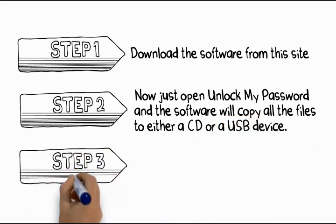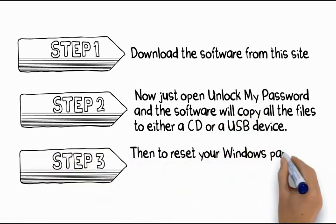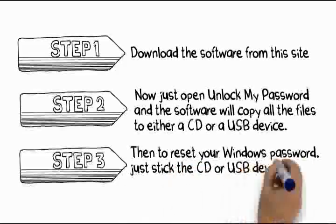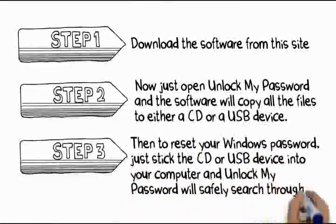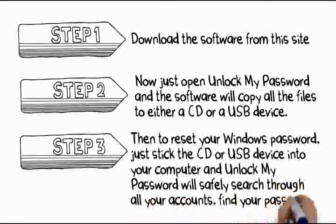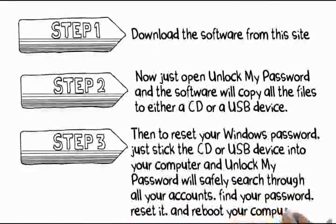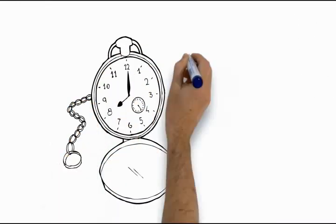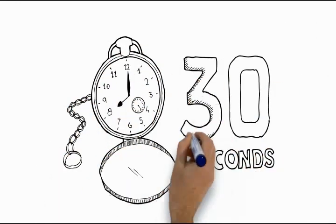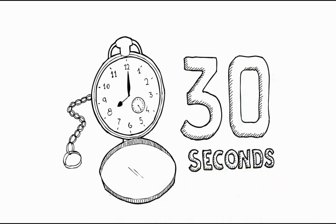Step 3: Then, to reset your Windows password, just stick the CD or USB device into your computer and Unlock My Password will safely search through all your accounts, find your password, reset it, and reboot your computer. It's that easy. There's no technical knowledge required and you can unlock your computer in less than 30 seconds.